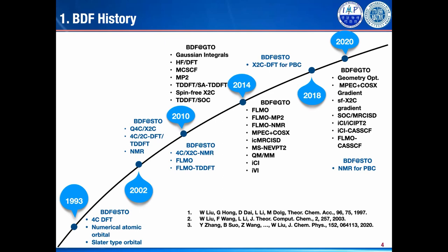Another prestigious contribution from BDF is relativistic NMR theory. For the first time, NMR was correctly analyzed and understood. 2010 is another important year. At that year, invited by Professor Wenjian Liu, I joined the BDF group and worked as a postdoctoral researcher at Peking University. Because the old BDF code only used Slater-type orbitals and numerical atomic orbitals, it lacked exact exchange. But for chemistry use, hybrid functionals and correlation are important, so we started the BDF-GTO project.